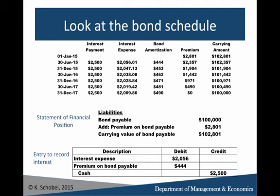Building the schedule for a premium bond: the original face value is $100,000, and we have a premium of $2,801, making the carrying value on the day it's issued $102,801 — as shown on the statement of financial position. Each time we make a payment, the interest payment is the same: 5% divided by 2, which is 2.5% times $100,000. The interest expense is the 4% market rate divided by 2, times the carrying amount, which will be less than the interest payment. Hence, the bond premium slowly decreases until the carrying amount reduces from $102,801 all the way down to $100,000 at maturity. To record interest expense for a premium bond, you debit interest expense, debit the premium on bond payable to amortize it, and credit cash for $2,500.